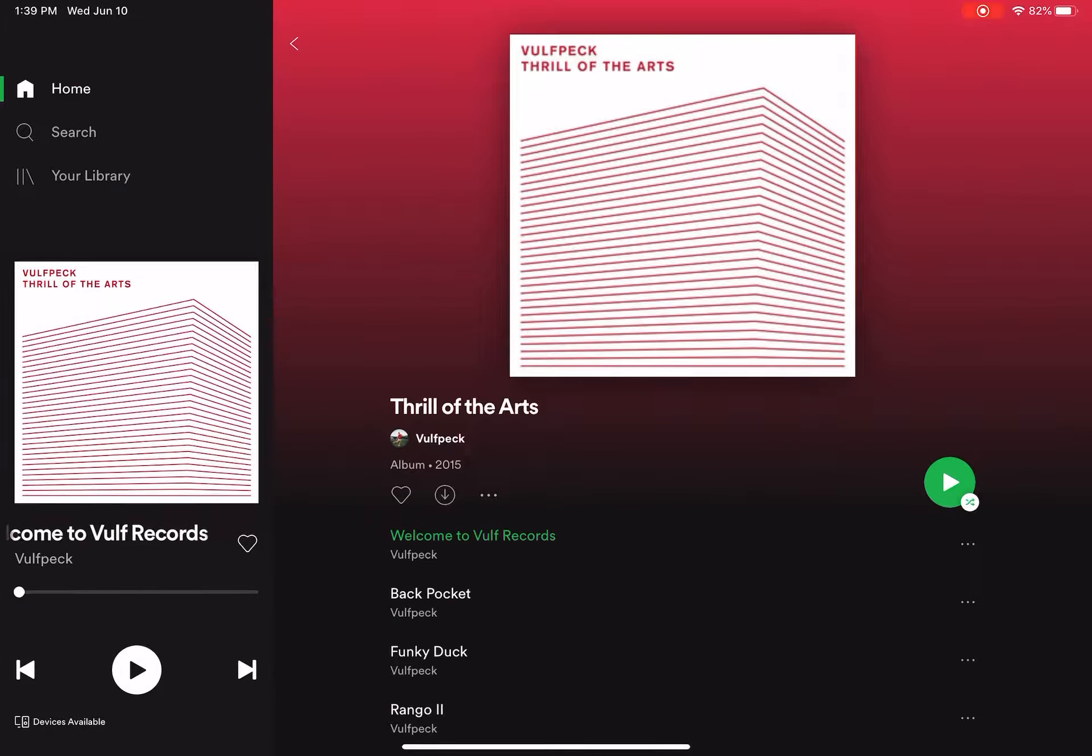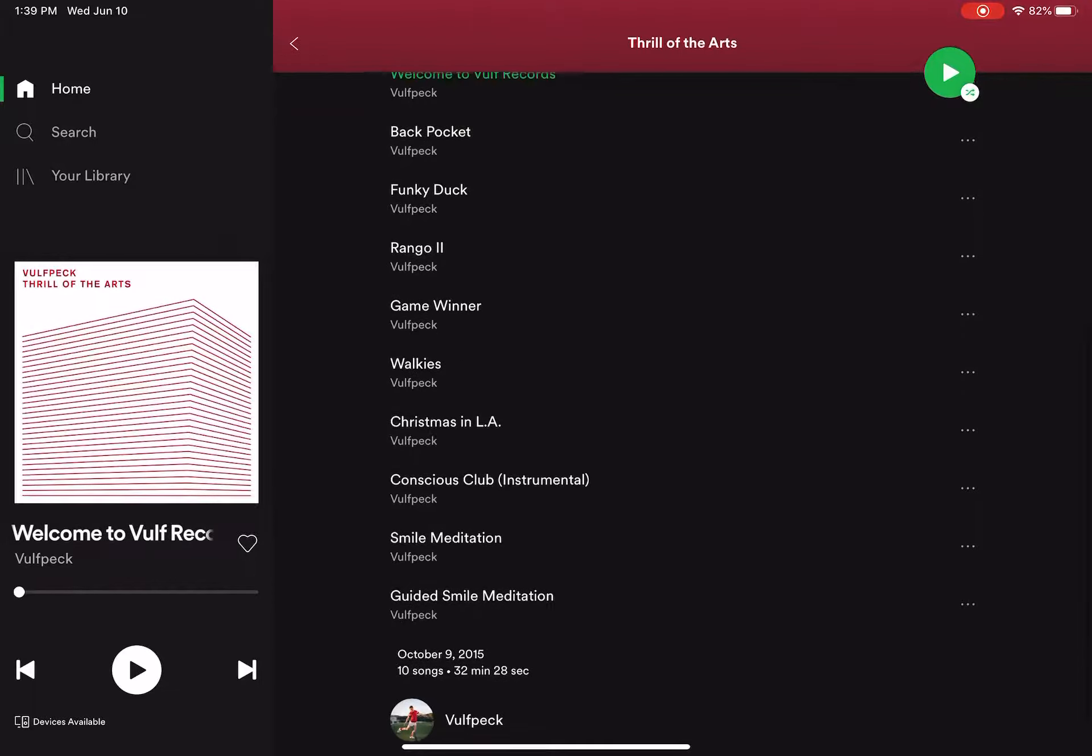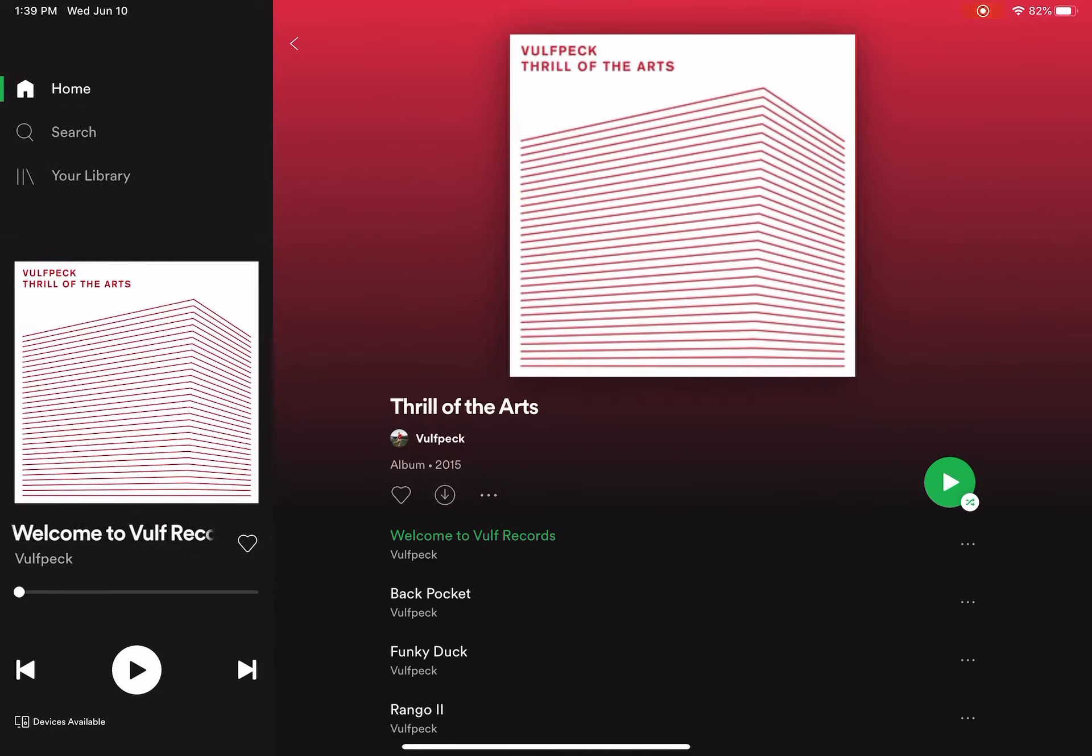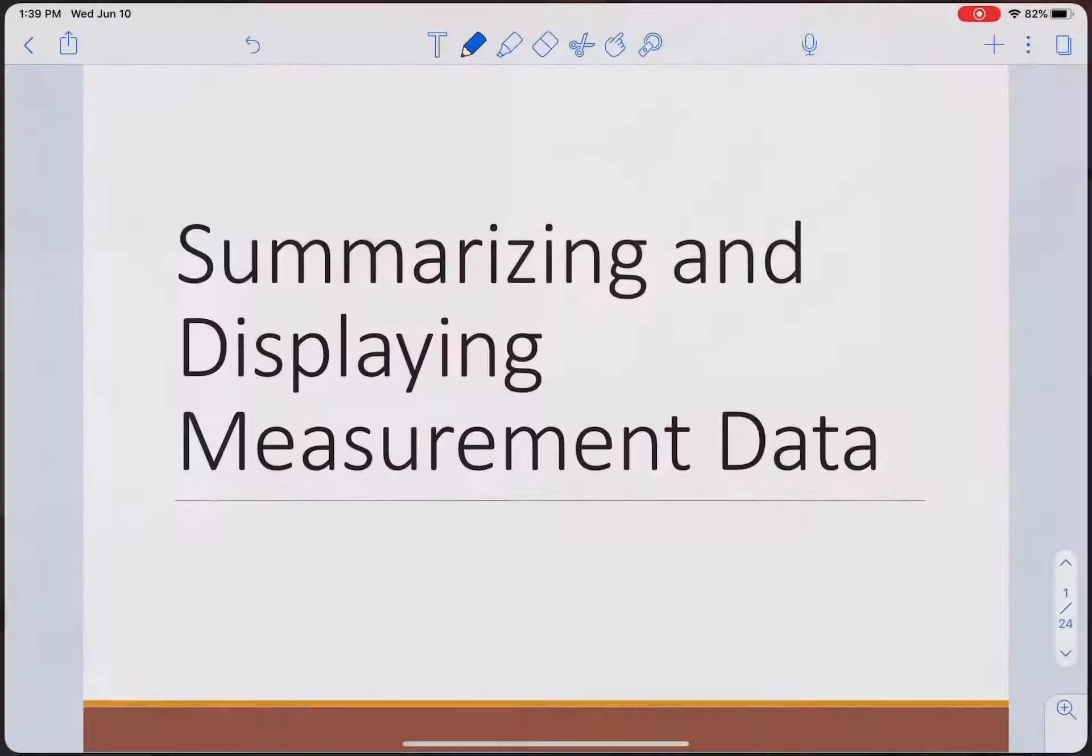But before we get into it, let's just talk about the album of the week here. Wolfpack is my favorite band, maybe of all time. I certainly listen to them the most. They're like a funk band out of California in LA. I think they all met at Ann Arbor, interestingly enough. My favorite song on here is Funky Duck. It's just so funky. You should check them out, especially if you're looking for some new music.